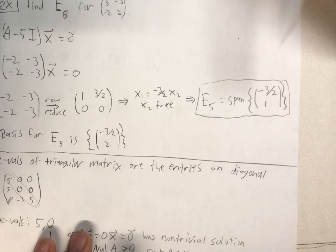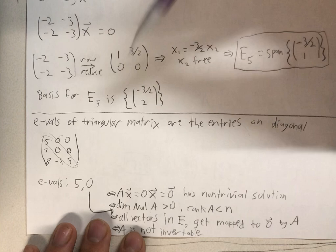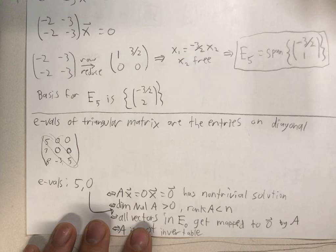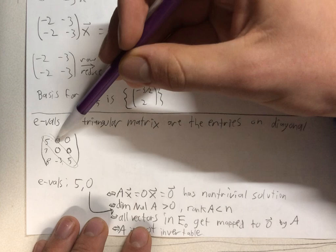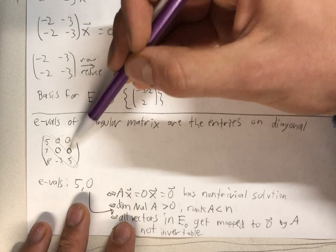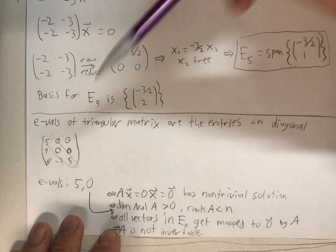So last thing, the eigenvalues of a triangular matrix are the entries on the diagonal. And a triangular matrix is any matrix where the entries above or below the diagonal are 0, so it's just these three. In this case, it has to be 0, or these three entries. So these values are our eigenvalues of 5 and 0.